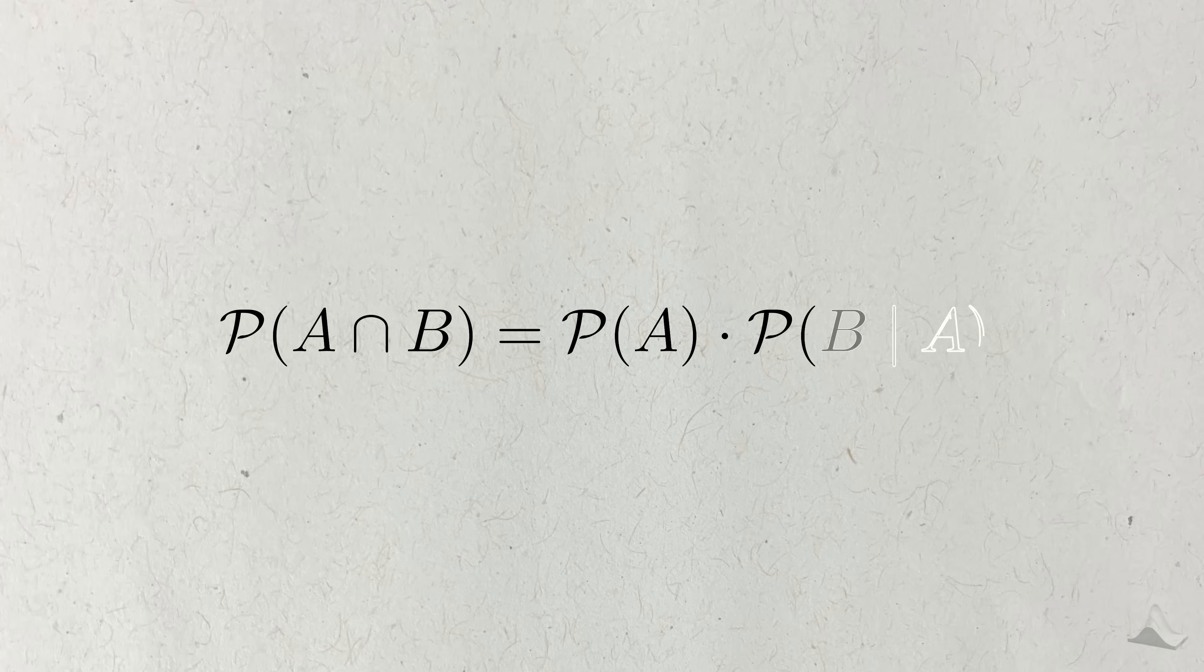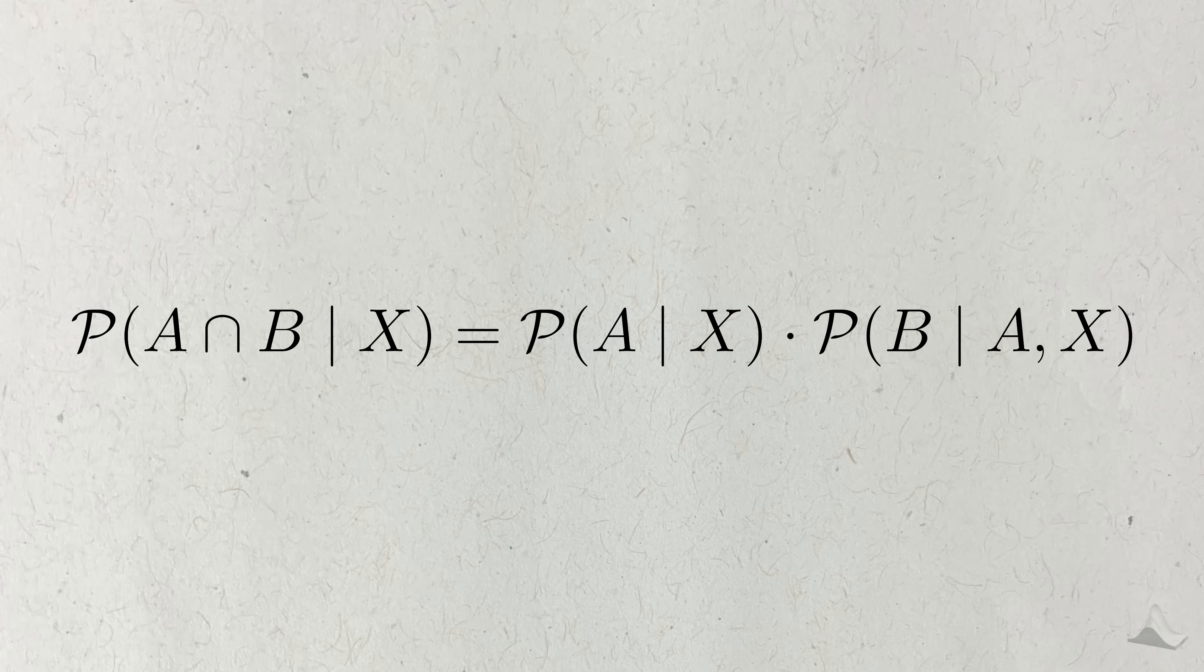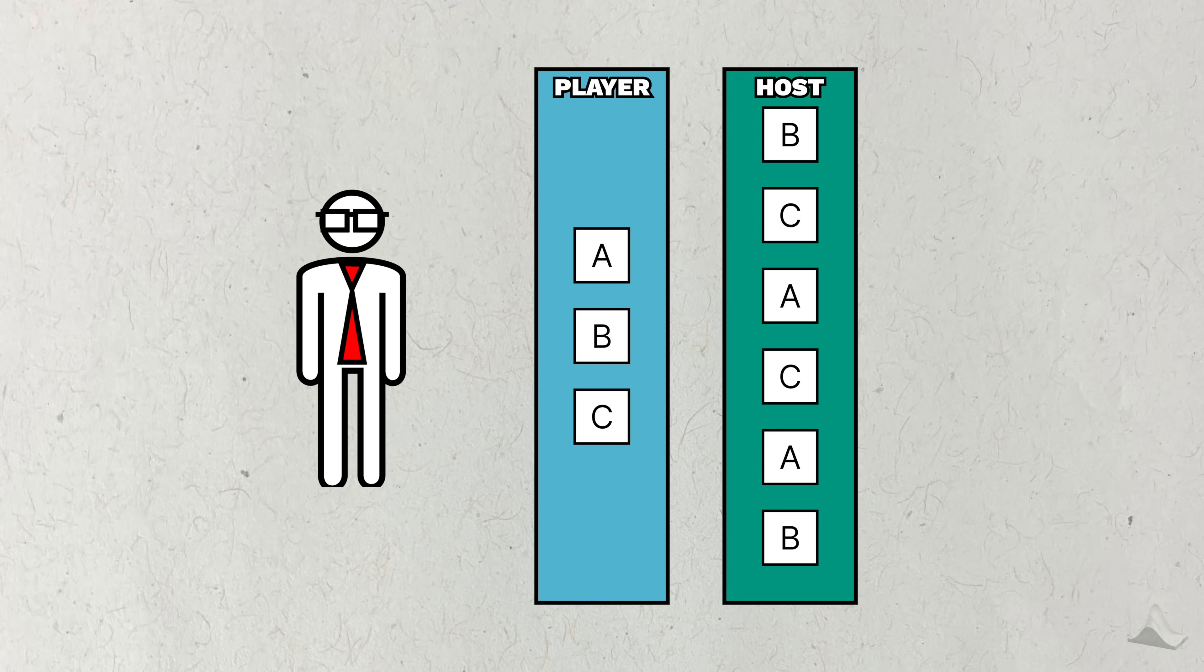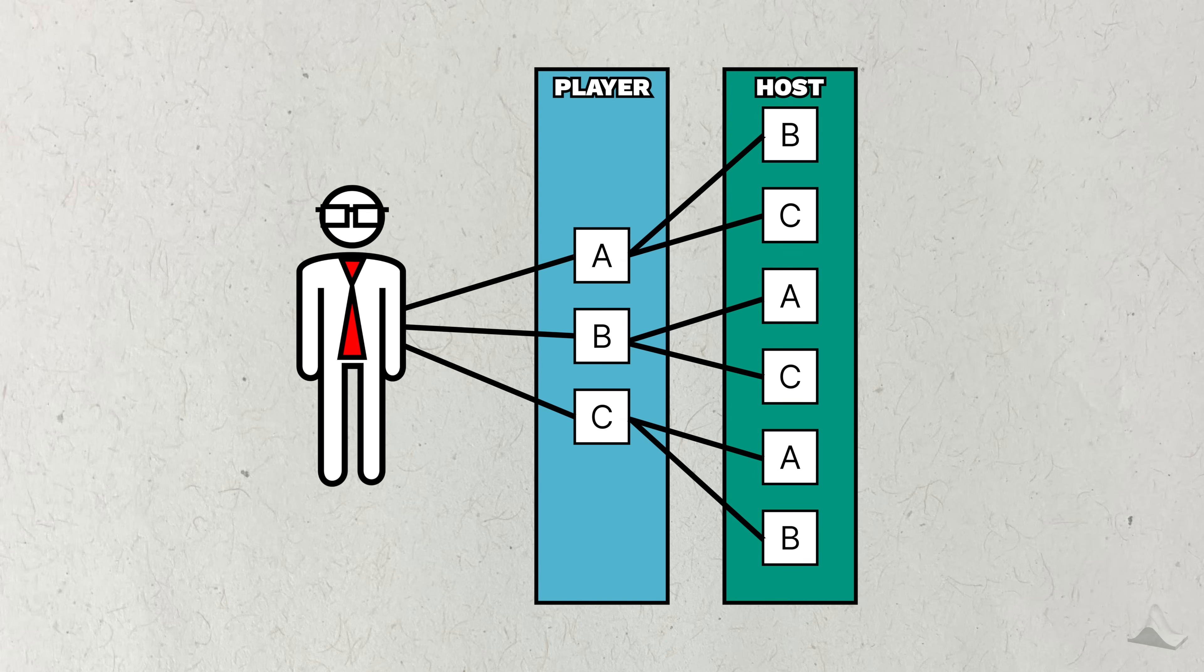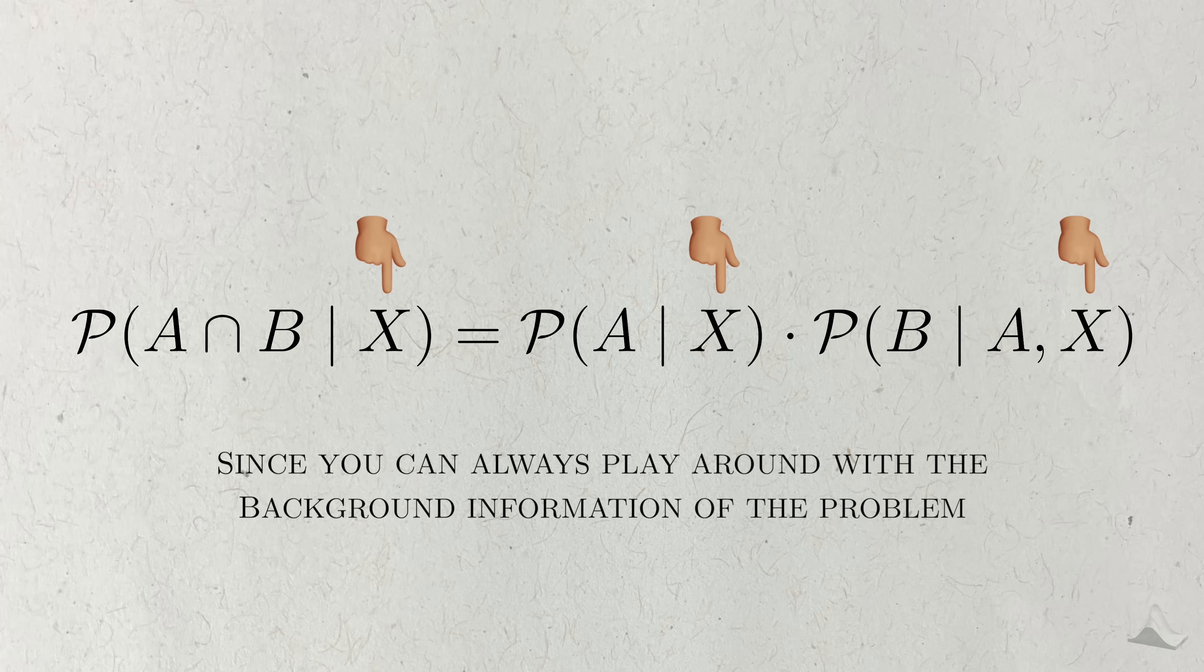You might even say that the Monty Hall problem is better served by this equation, where all of these probabilities are conditioned on X, which represents someone's background information. This lets you play with all sorts of interesting variations of the Monty Hall problem. Maybe your host has an irrational fear of the letter C. That's just a dumb example, but it lets you know how interesting the Monty Hall problem can become, since you can play around with this prior information.